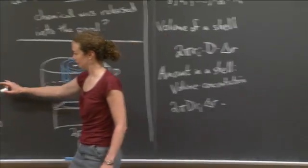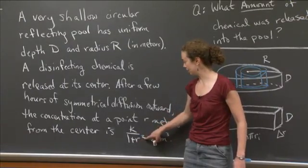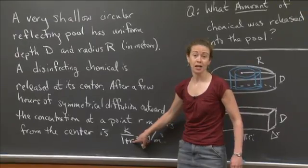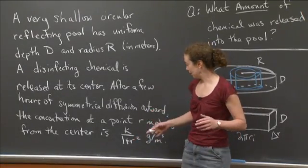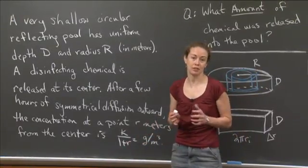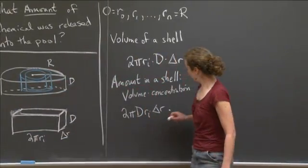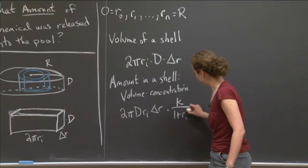which if we come back over here, the concentration is k divided by 1 plus r squared grams per cubic meter. The r in this case is the r sub i. I'm assuming, because I'm approximating this, that everywhere in the shell has the same concentration, has the concentration of the interior radius. So if we come back over here, we're going to write k over 1 plus r sub i squared.